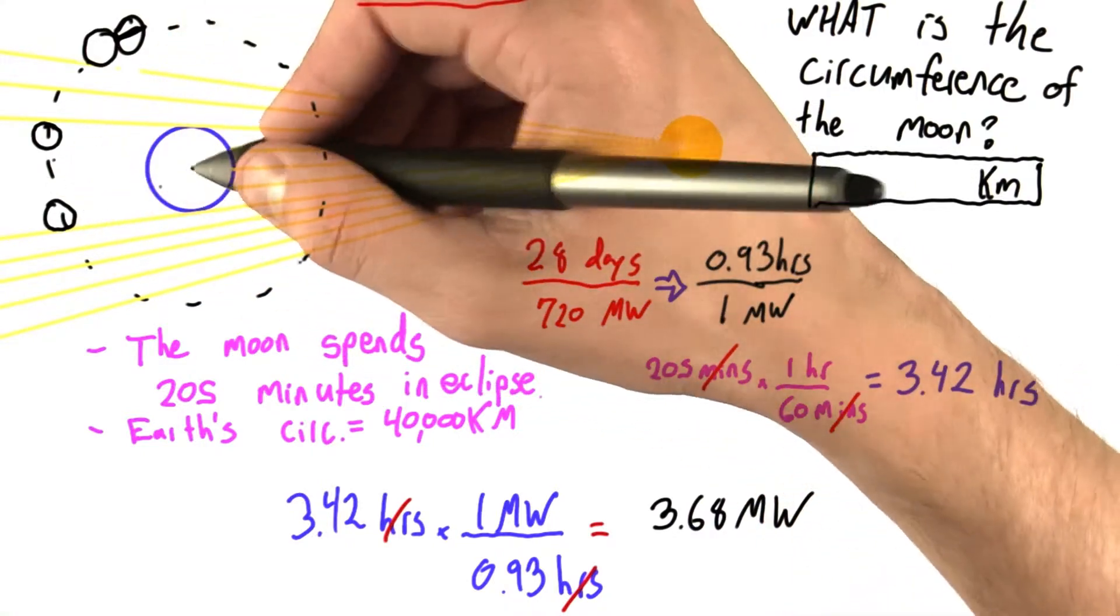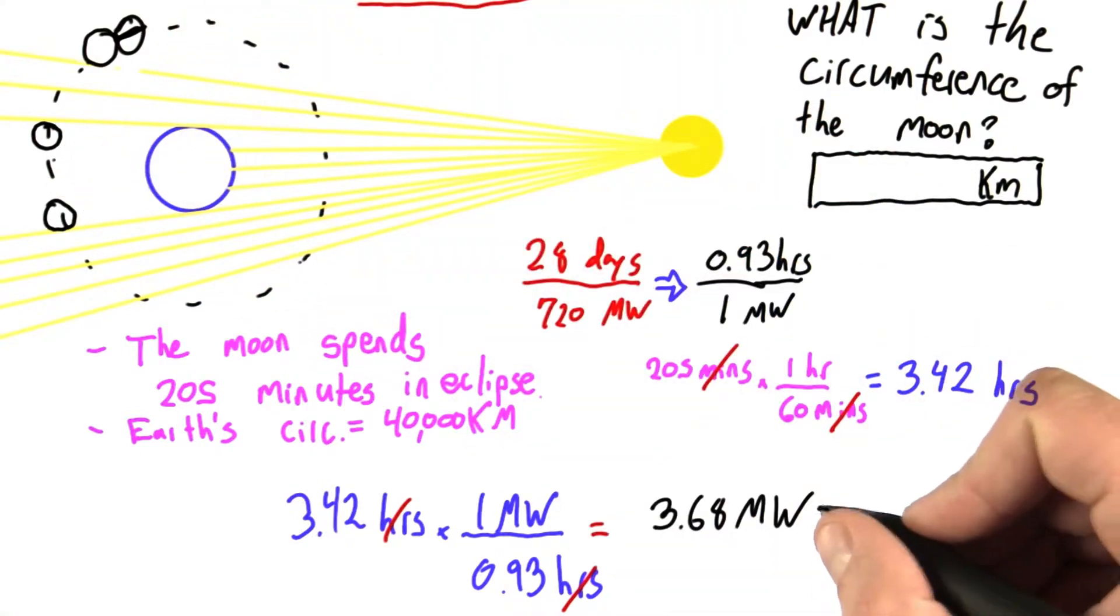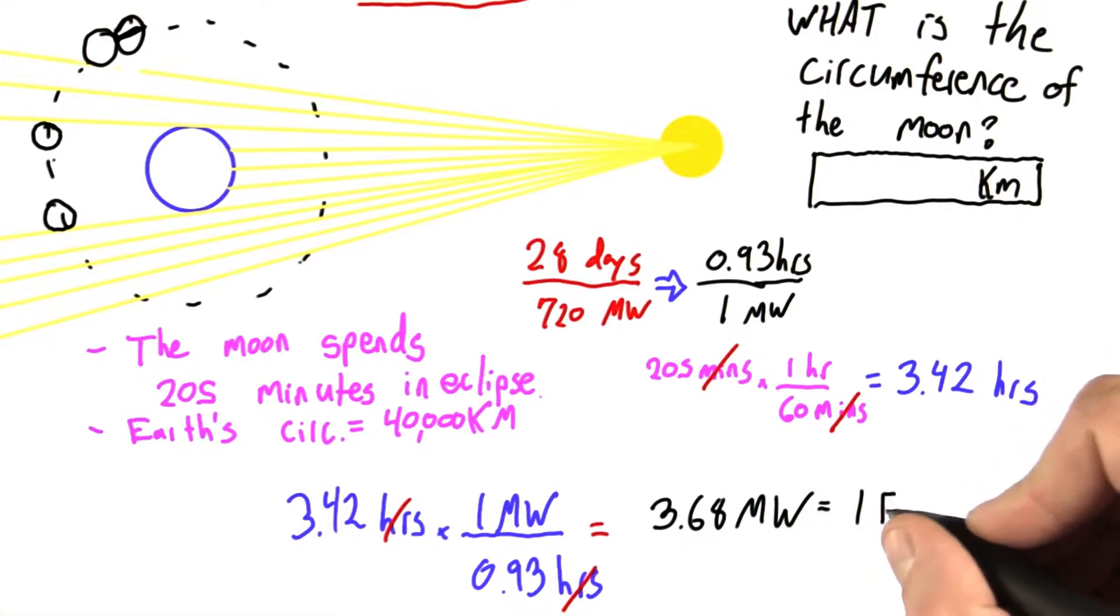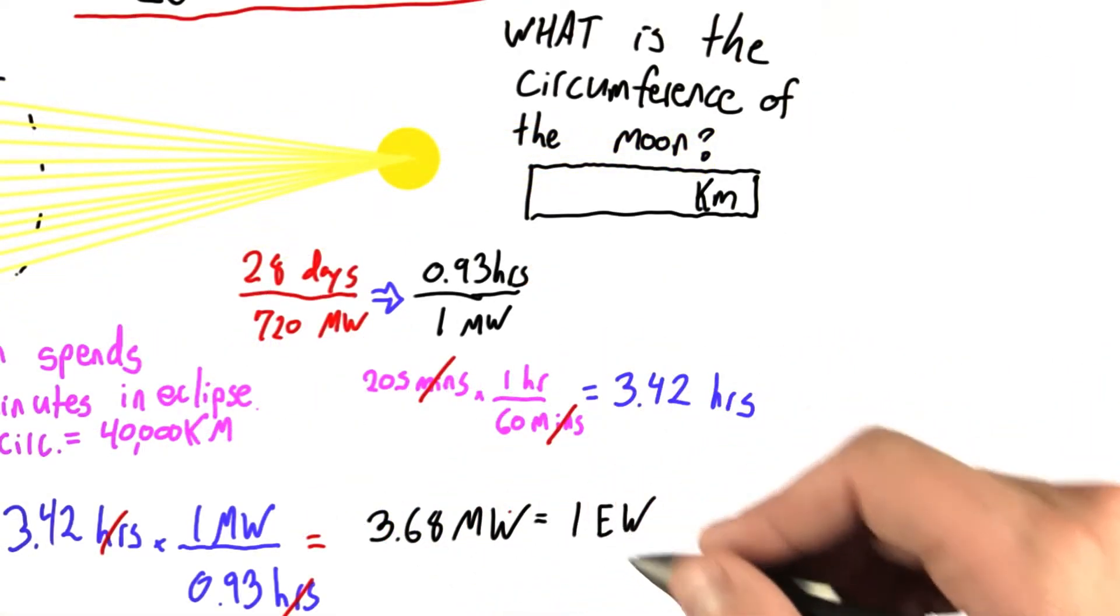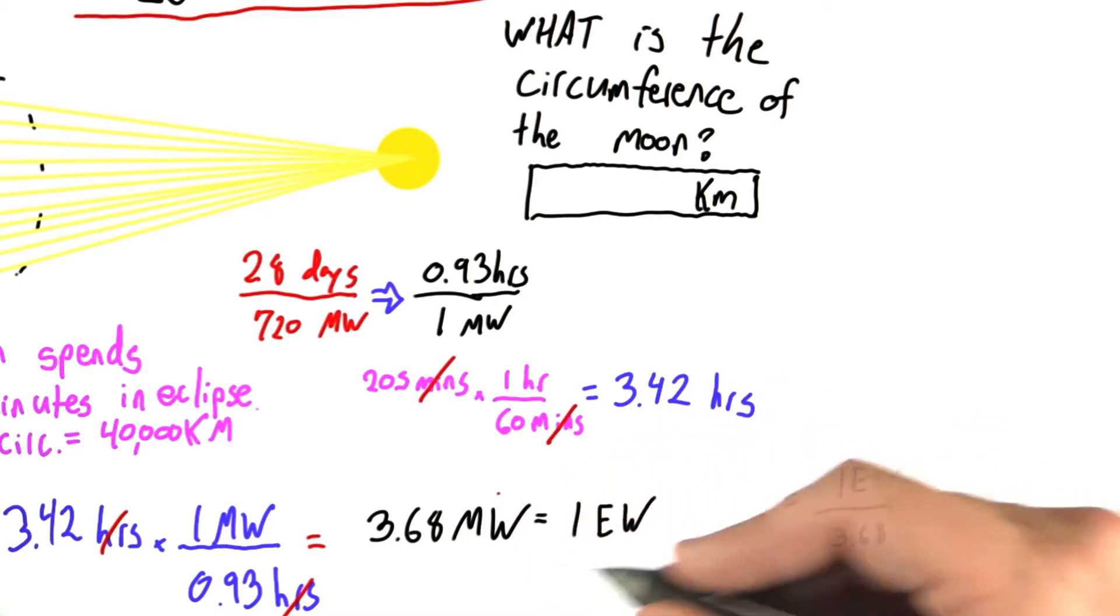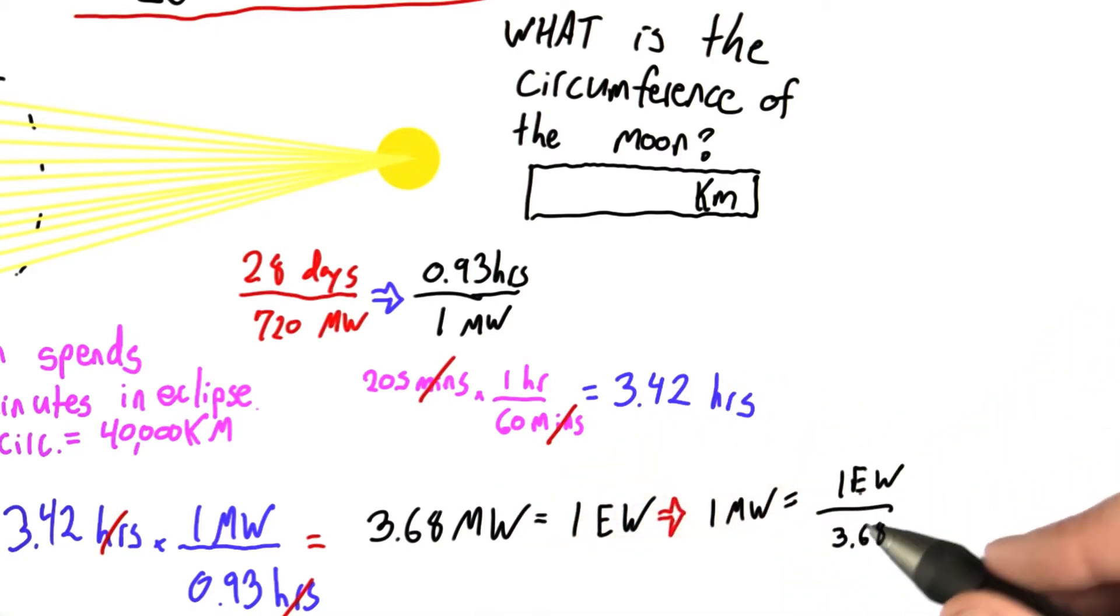Since we said the shadow was the same size as the Earth, well this is equal to 1 earth width. Let's divide this by 3.68 because I want to know what 1 moon width is. And I find it's 1 earth width divided by 3.68. So the moon is 3.68 times smaller than the Earth.